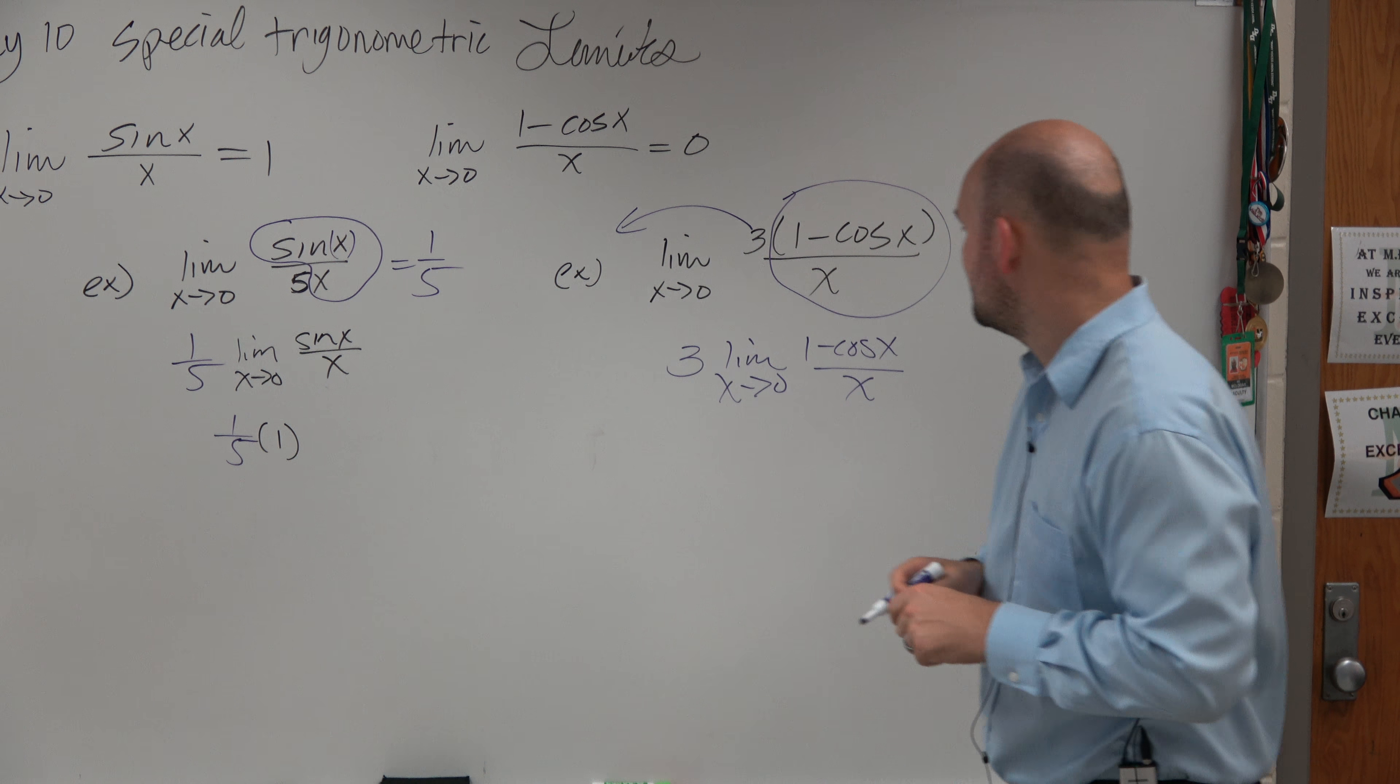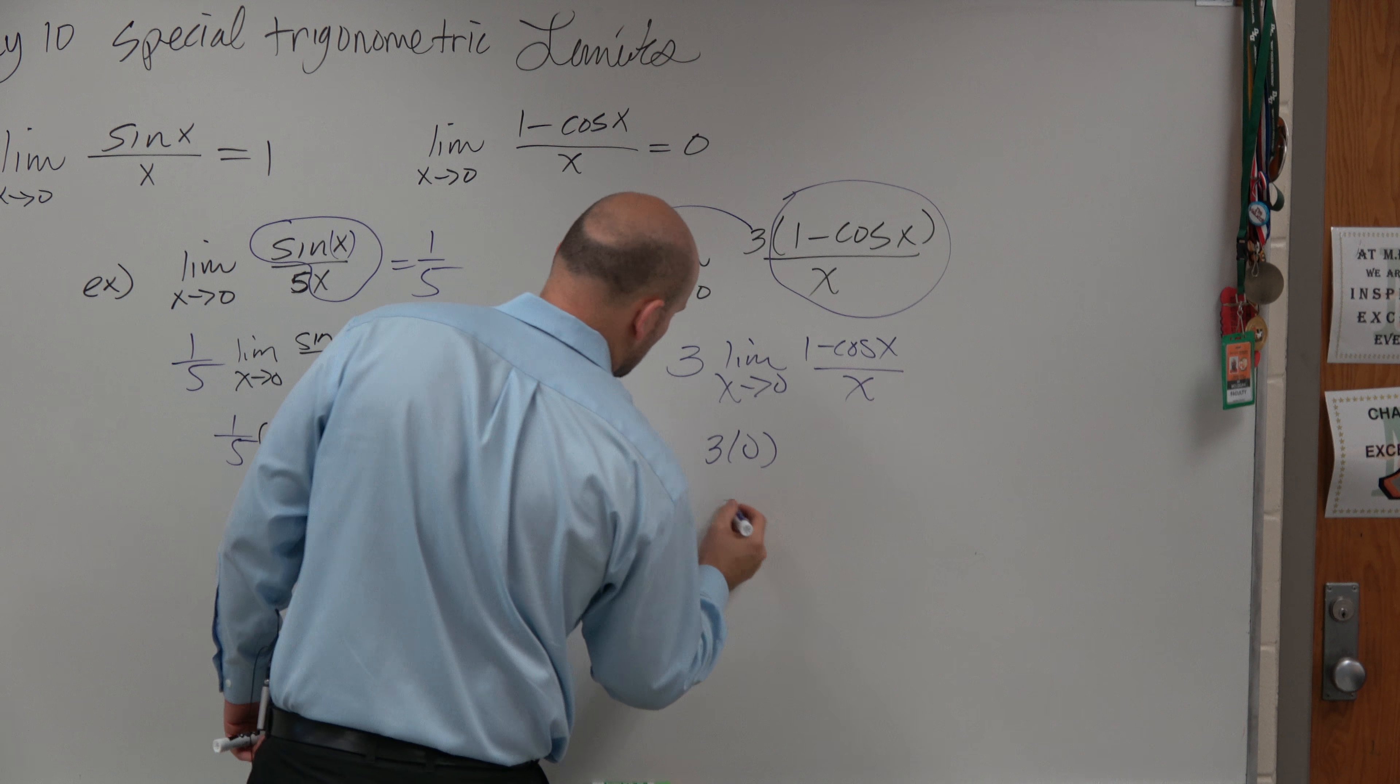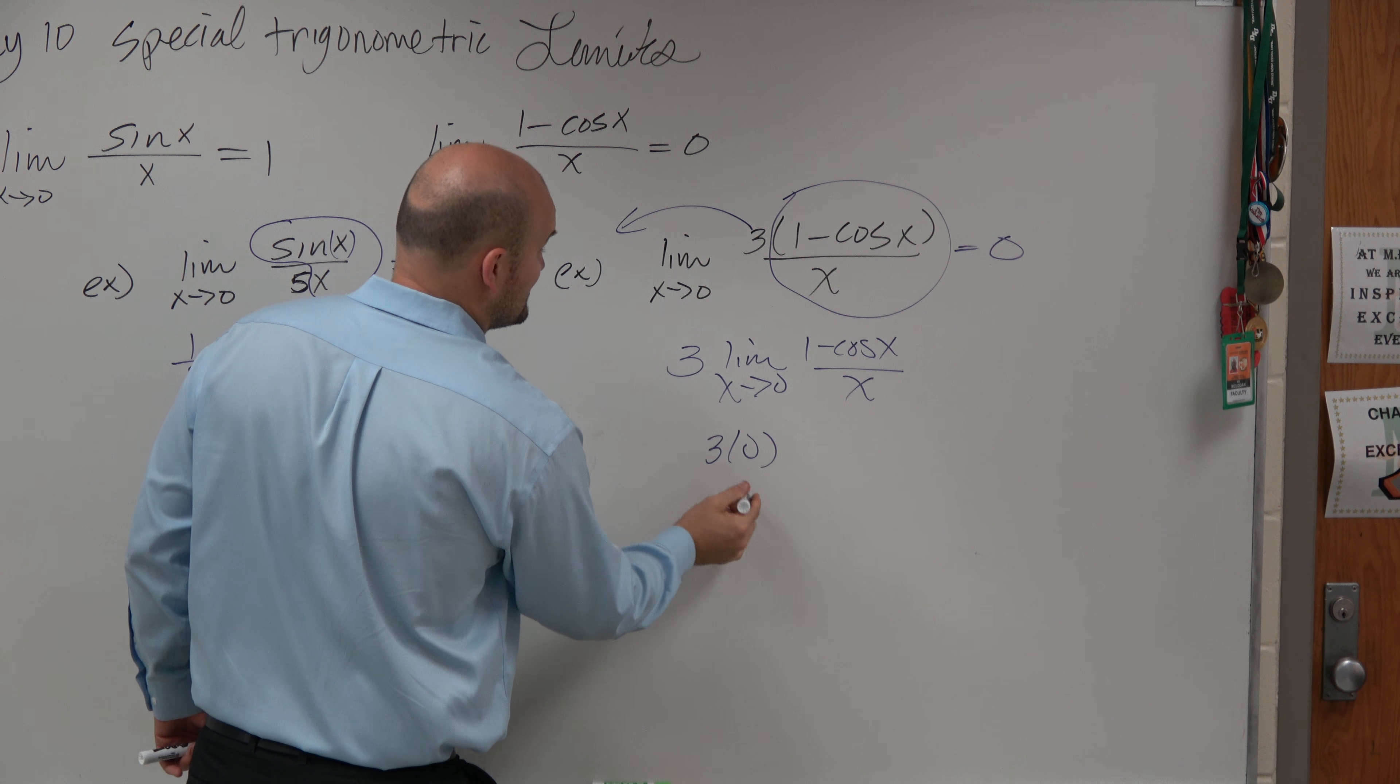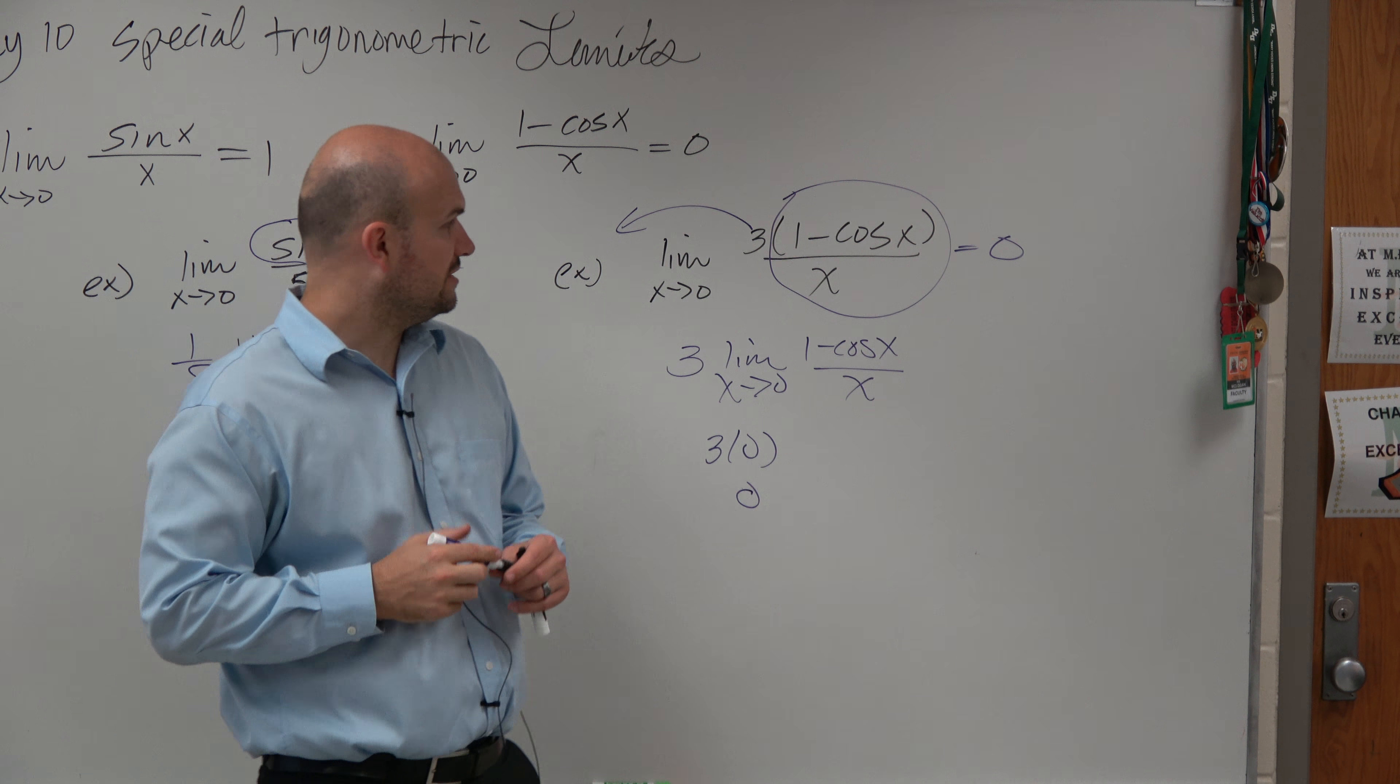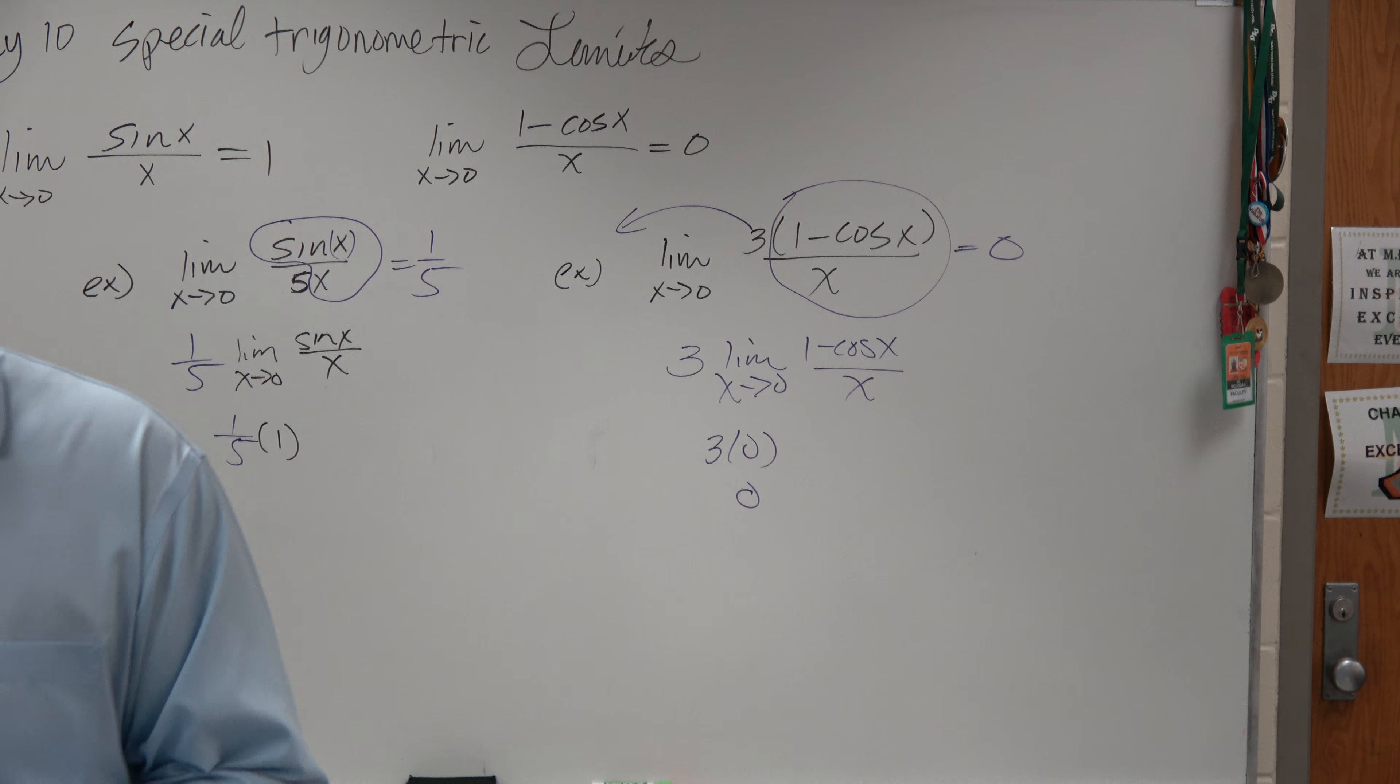However, the limit as x approaches 0 of 1 minus cosine of x over x is just going to equal 0. So that's equal to 3. I'm sorry. That's equal to 0. So your limit is equal to 0. Cool? Now you guys want to try the fun ones?